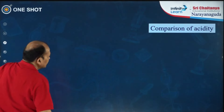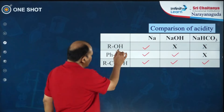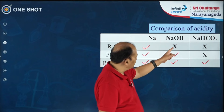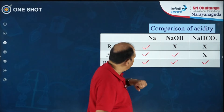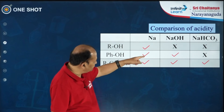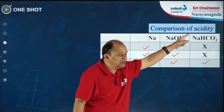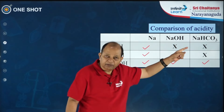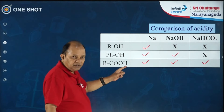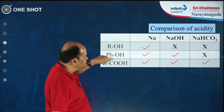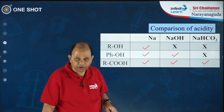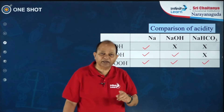Comparison of acidity: alcohol is a weak acid, reacting only with strong base — not with NaOH or sodium bicarbonate. Phenol is moderately acidic, reacting with sodium and sodium hydroxide but not weak bases like sodium bicarbonate. Carboxylic acids are stronger acids compared to both, so they react with sodium, sodium hydroxide, and sodium bicarbonate.